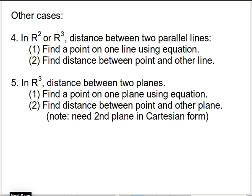Now I want to talk about some special cases that don't have a ready formula but can be reduced to one of those three original formulas. For example, what if we have two parallel lines? Whether it's R2 or R3, the procedure is the same — only the formula we use will be different. The first thing we do is find a point on one of those lines using the equation. So you can make a substitution and find a point on one line, and now you essentially have the distance between a point and another line, and you have a formula for that, whether it's R2 or R3.